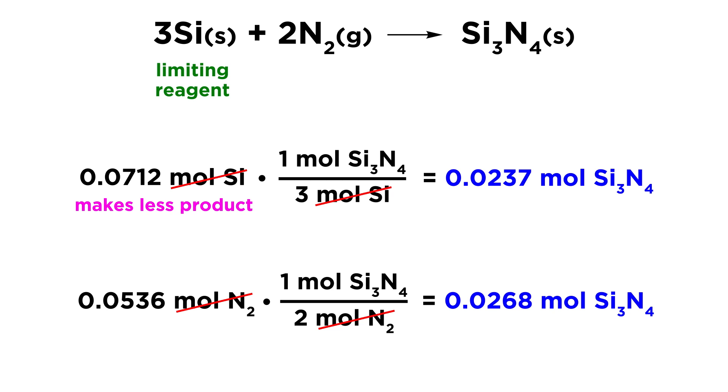So you can use either strategy. You can see how much of the other reactant would be needed for the first reactant to be used up completely, or you could see how much product each of the quantities of the reactants could form, and whichever one makes less is limiting. So it's totally up to you. These are both valid ways to do it. So as we said, silicon is the limiting reagent,